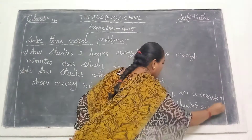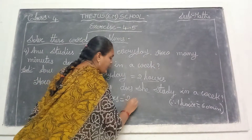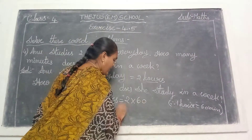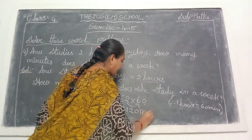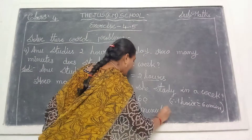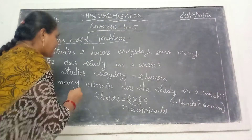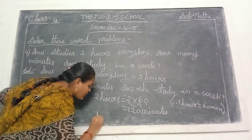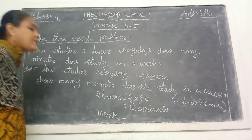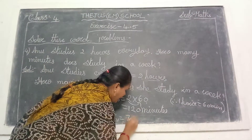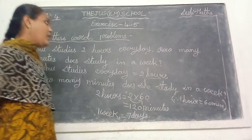Yes, children? So 2 hours means 2 into 60. 2 sixes are 12, and write the 0. So 120 minutes. And next, 1 week equals how many days, children? 1 week equals 7 days. Write here: 1 week equals 7 days.